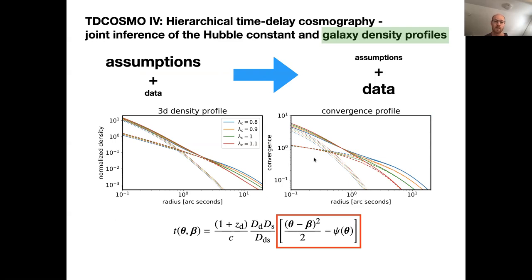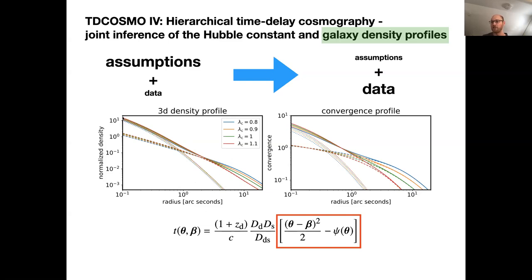The key summary of what has changed in this update: we are going from assumptions and data to assumptions and data where we put different weights on each. As reflected in the title of TD-Cosmo4, we are simultaneously constraining the radial change in the mass density profile while making inferences on the Hubble constant. The dotted line is the stellar profile, the dashed line is the dark matter, and when you transform an approximate mass sheet, you can rescale the mass-to-light ratio and make the dark matter profile slightly more diffuse or concentrated. The focus in this time delay prediction is on this lensing distortion part.